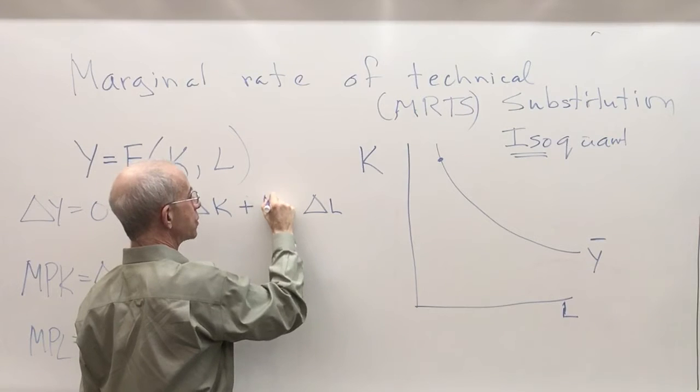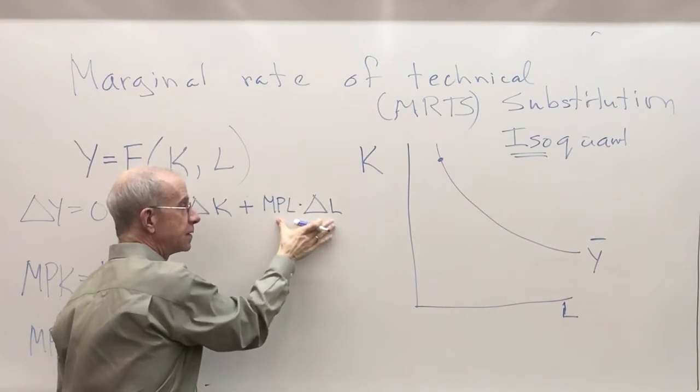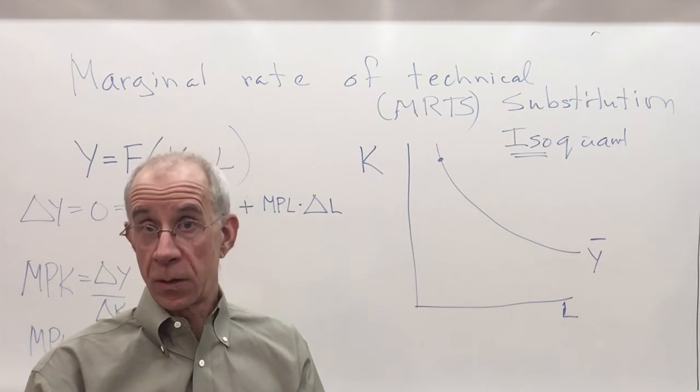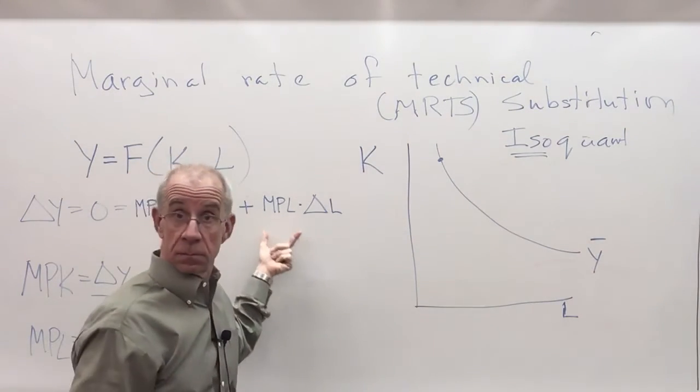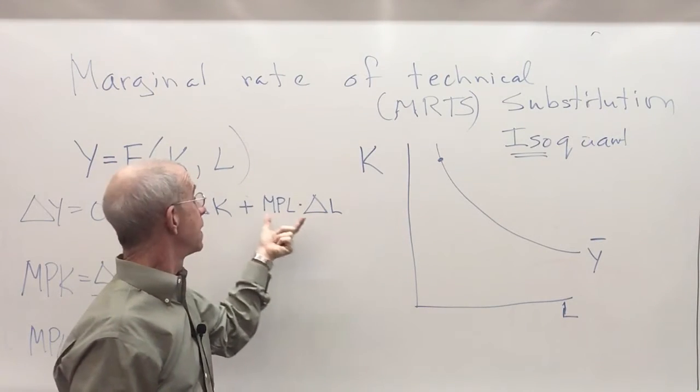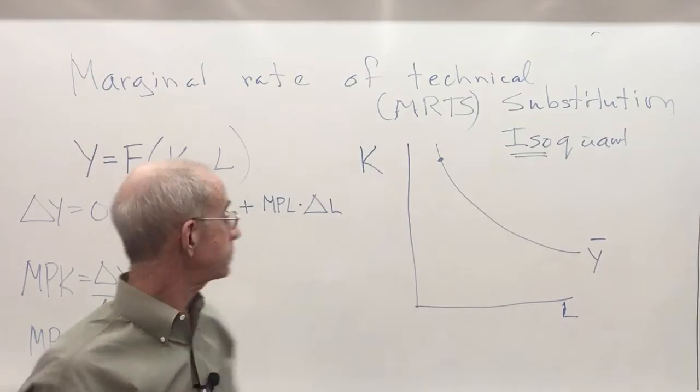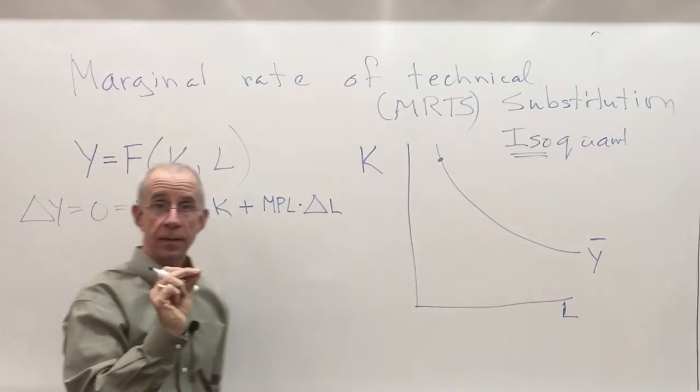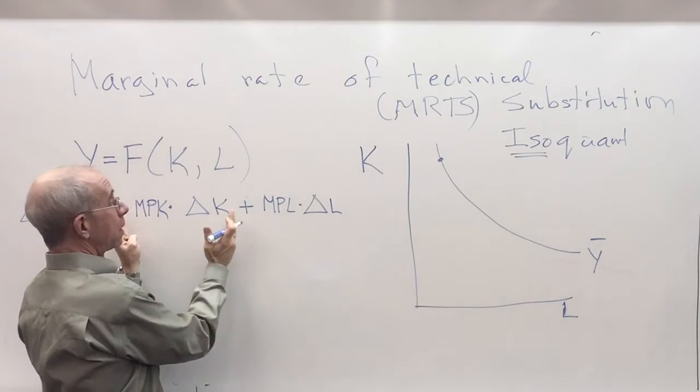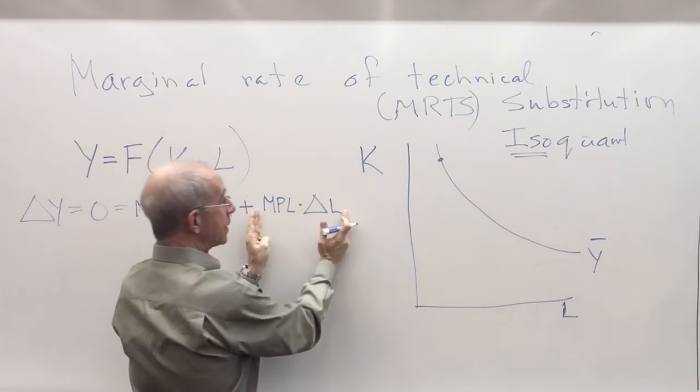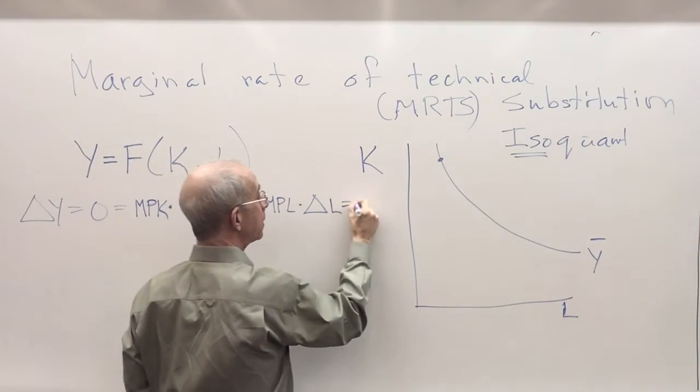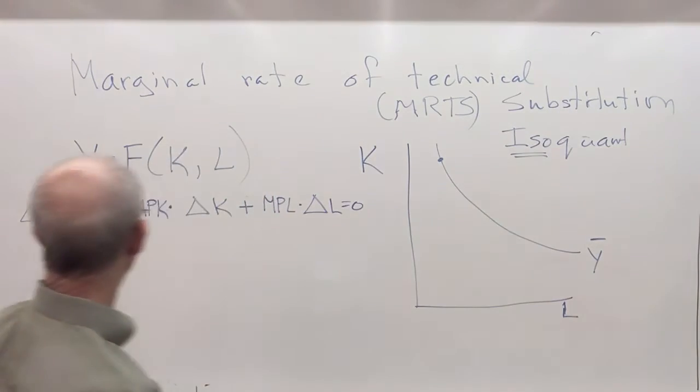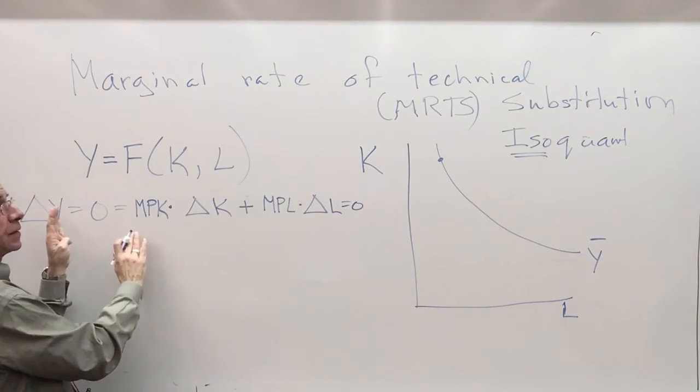Plus marginal productivity of labor. This side is how much extra output I get by hiring one more unit of labor, and this tells you how many extra workers, this tells you how much each worker brings. Now all of this for an isoquant adds up to zero. Change of use in capital, change in use of labor and the productivities, all those add up to zero by design, because we're looking at a particular isoquant.